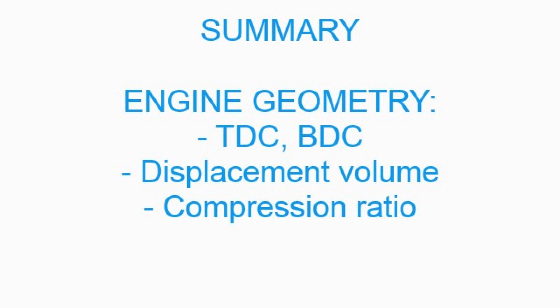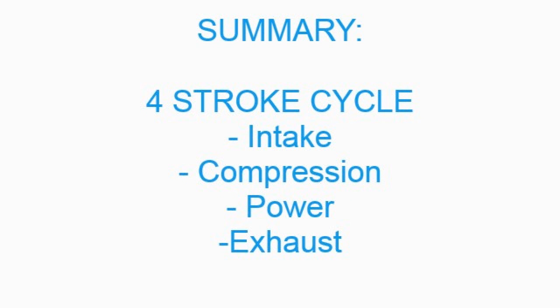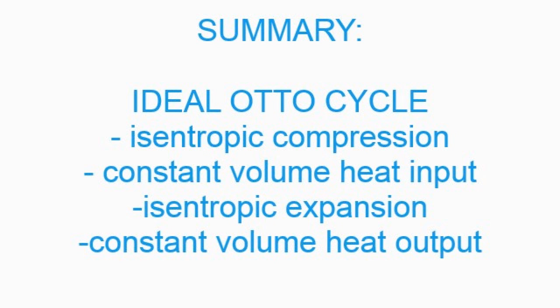So in summary in this video, we went over engine geometry, top dead center, bottom dead center. We looked at the four-stroke cycle: intake, compression, power, exhaust. Then we looked at the ideal Otto cycle, which consists of compression, constant volume heat.